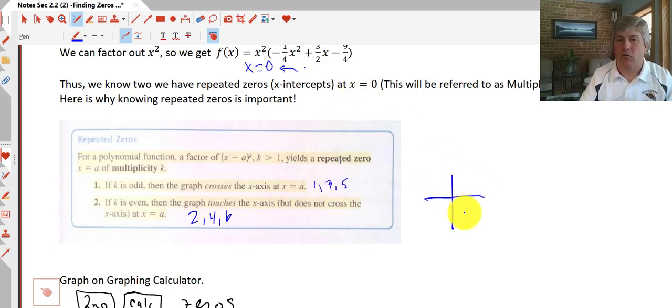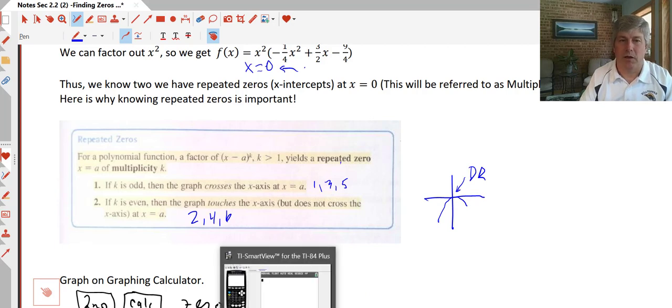So we know that this graph is going to bounce off of, and this is going to go down, that particular point because it's a double root. So some of you guys may see how to factor that one pretty easily. But I'm going to go to the graphing calculator and I'm going to graph this and see if I can find the zeros that way and also the relative extrema.